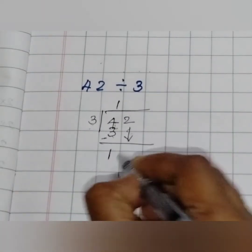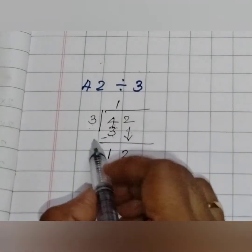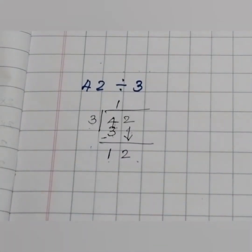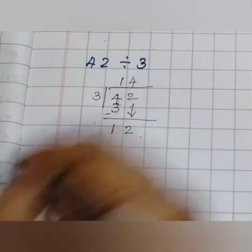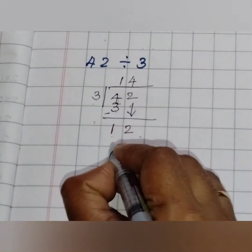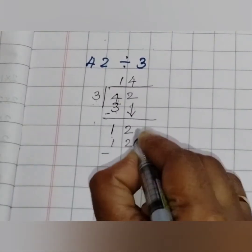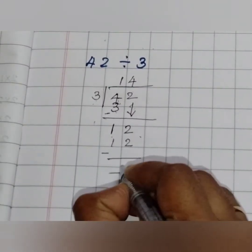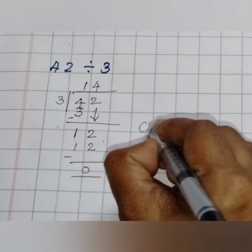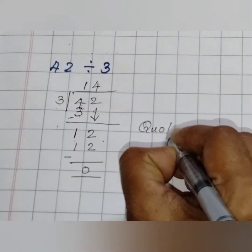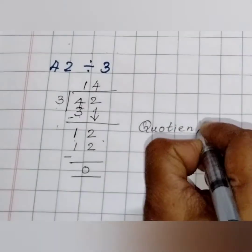Now while bringing down 2, it became 12. When 12 comes, yes, 3 fours are 12. 12 minus 12 is 0. Here our quotient is 14 and the remainder is 0.